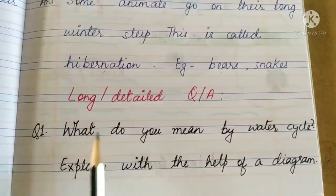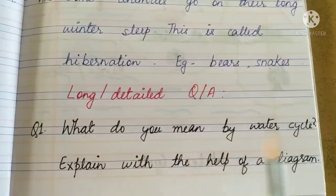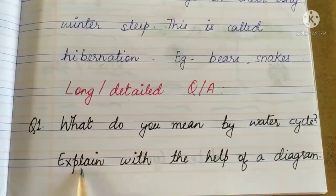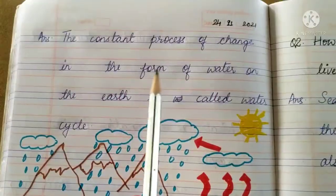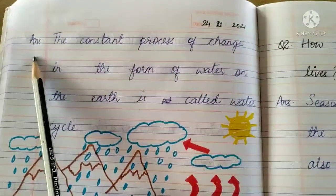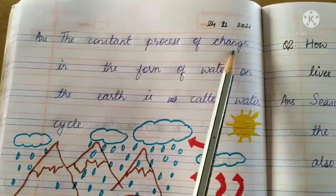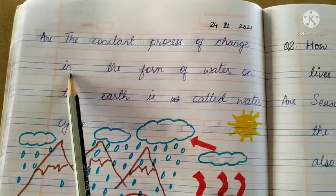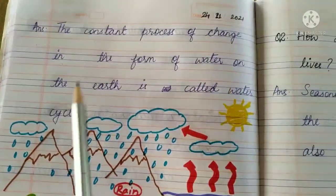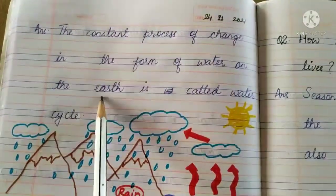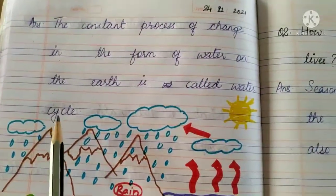Question 1. What do you mean by water cycle? Explain with the help of a diagram. Answer: The constant process of change in the form of water on the earth is called water cycle.